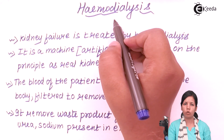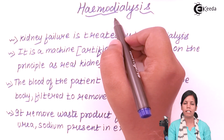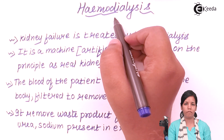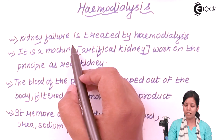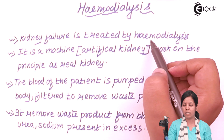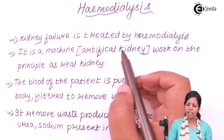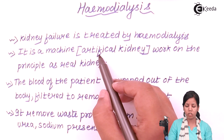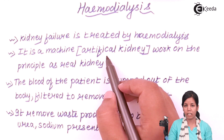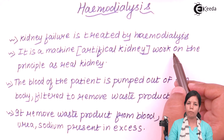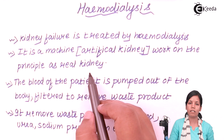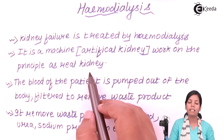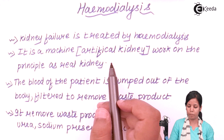Hemodialysis is a procedure used whenever somebody's kidney is not functioning properly or has eventually failed. Kidney failure is treated by this hemodialysis machine. It is a machine that can be called an artificial kidney, as it works on the same principle as your real kidney works. It performs ultrafiltration, glomerular filtration, and selective absorption — all of them.